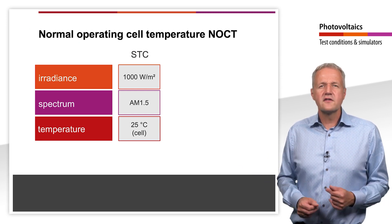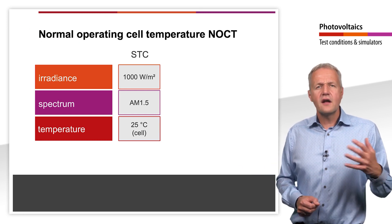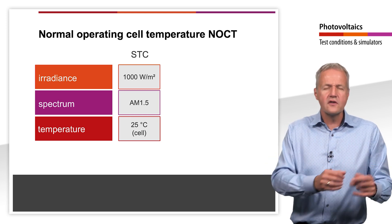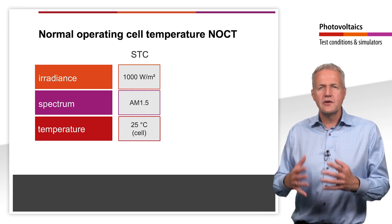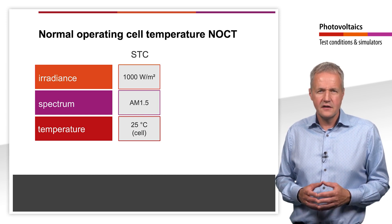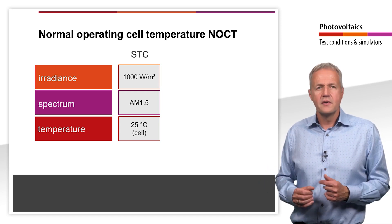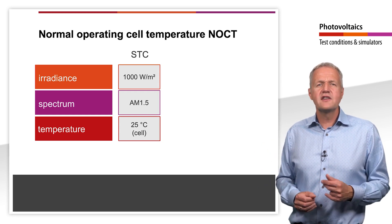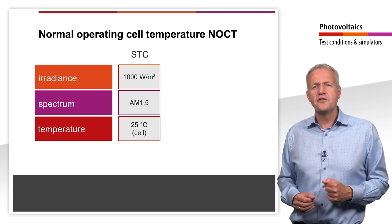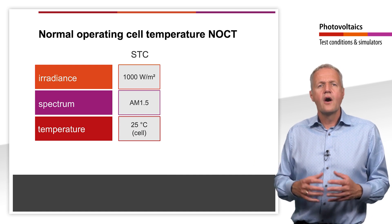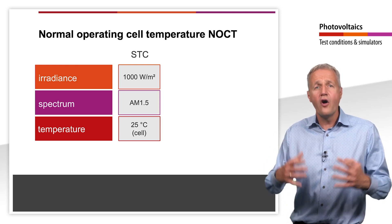For solar modules, the electrical parameters under STC are usually specified in the datasheet, which allows a comparison of different solar modules. For most solar modules, however, the environmental conditions in reality are different from STC. In most countries, the irradiation is lower than 1000 W per square meter most of the time. In addition, even good solar modules heat up during normal operation. How much a module heats up depends largely on the module design and the back ventilation. As we have seen, temperature has a major influence on the performance of a solar module.